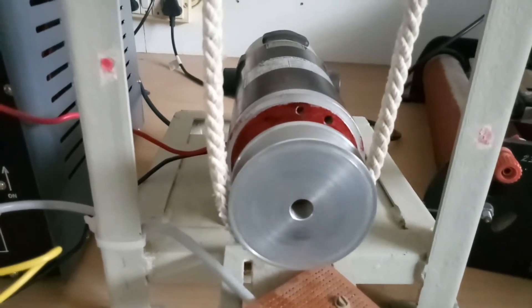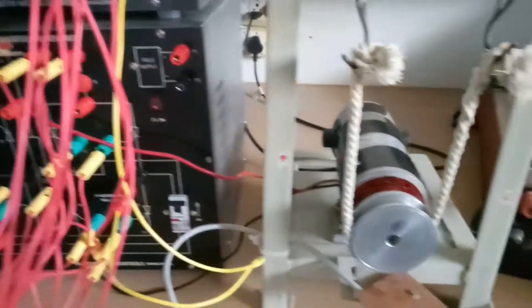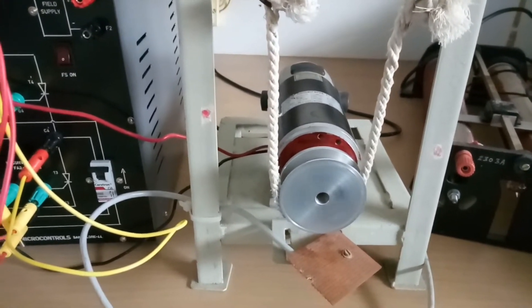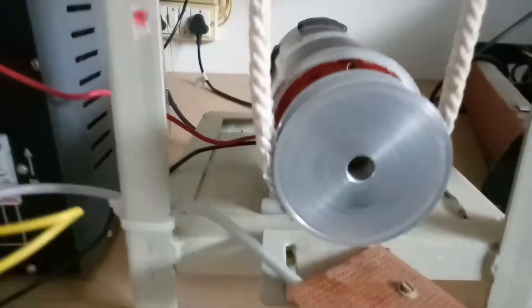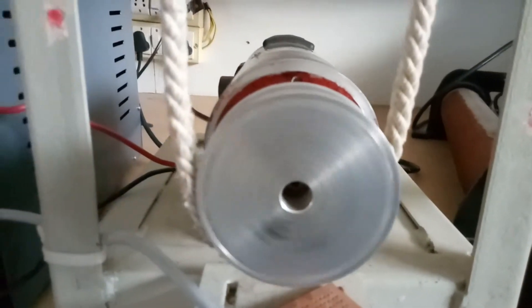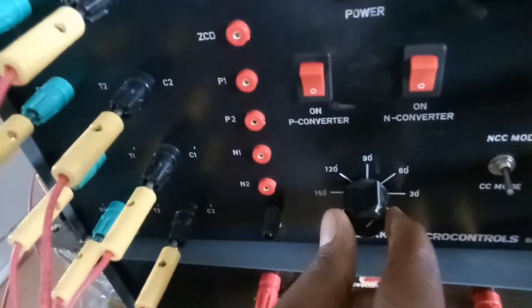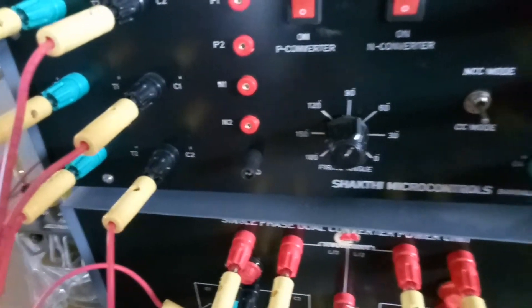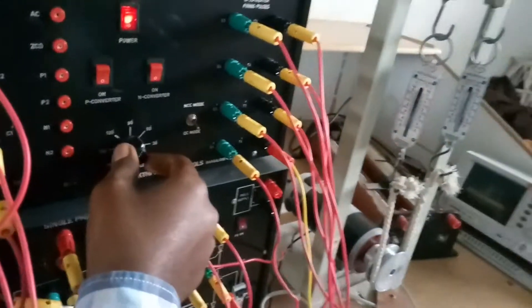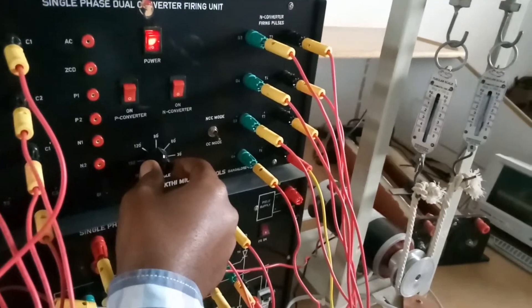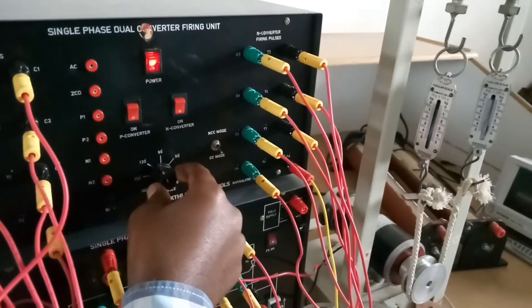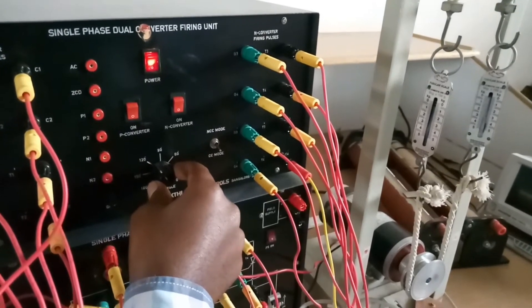Until this time we can see the motor speed can be controlled by varying the firing angle. The two converters can control one single motor. Reverse motoring and forward motoring, braking also possible.